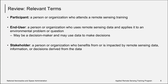A participant is a person or an organization who attends a remote sensing training. An end user is a person who uses remote sensing data, or who could potentially use it, to address an environmental problem or question — and this may be a decision maker. A stakeholder, on the other hand, is a person who stands to benefit from remote sensing data or from decisions taken using remote sensing data. A person could be one, two, or all three of these at one time.